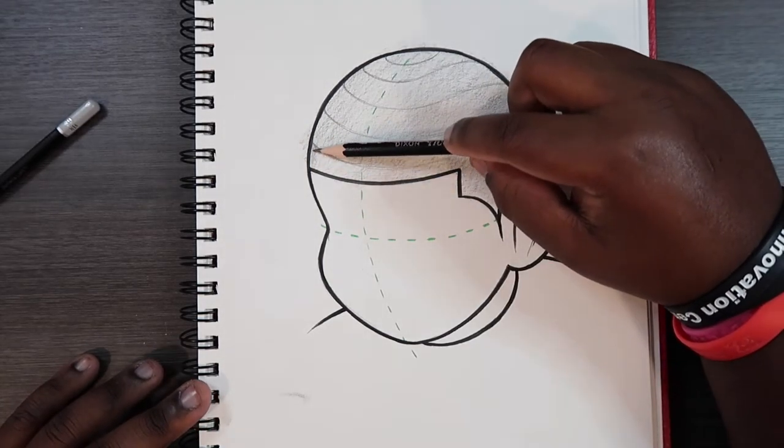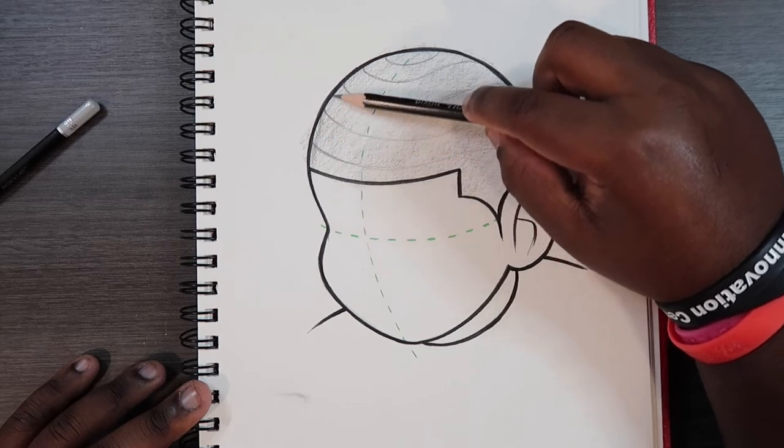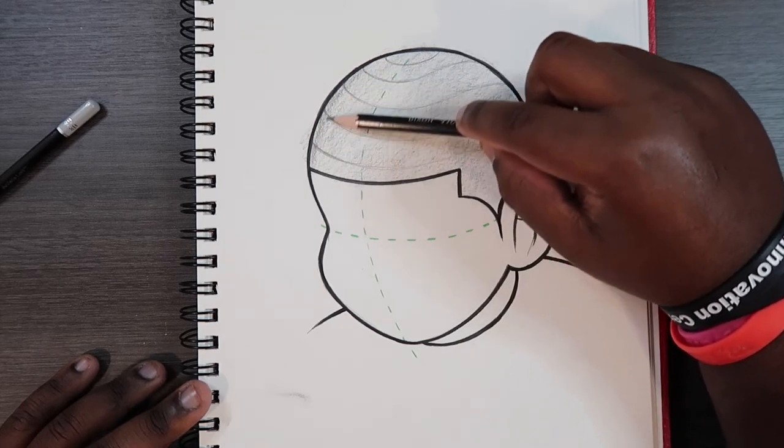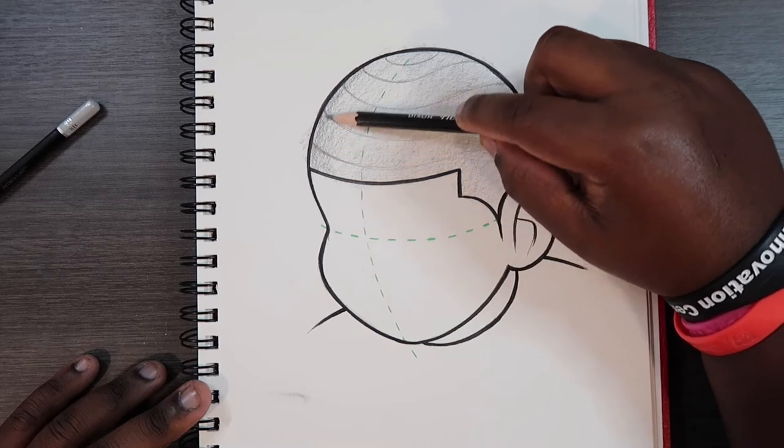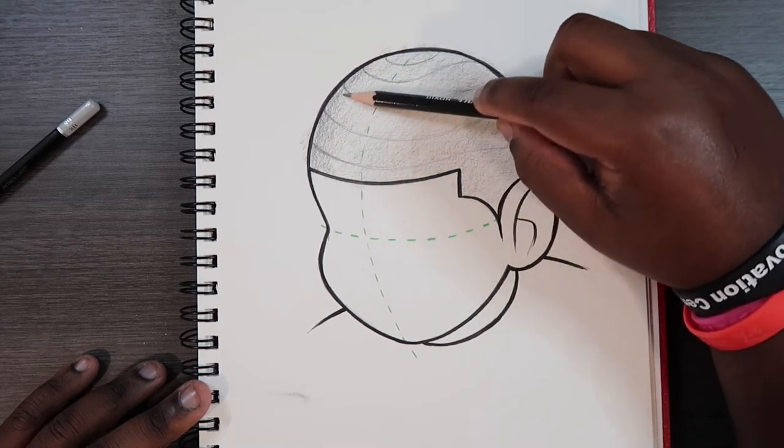Now what I'm going to do is take this same pencil again and apply just a little bit more pressure than I did the first time to apply shading to both sides of the head.